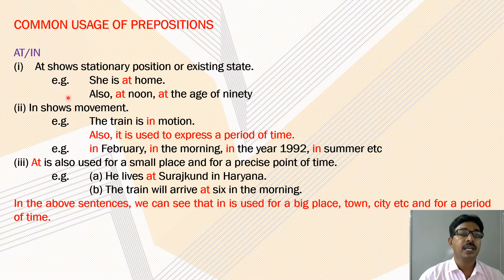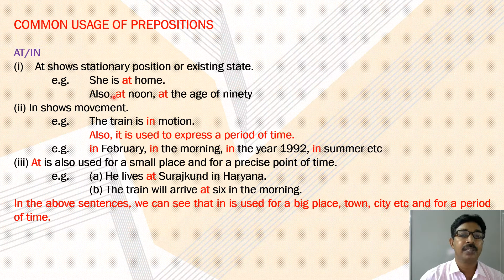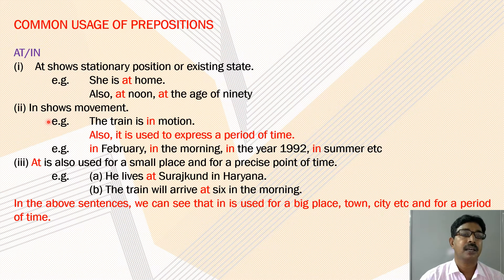Now let us learn the common uses of prepositions. The prepositions 'in' and 'at': 'at' shows the stationary position or existing state. Example: she is at home. 'At' is also used to tell about timings or position or state — for example, at noon, at the age of 90, and so on. The preposition 'in' shows movement. For example: the train is in motion.